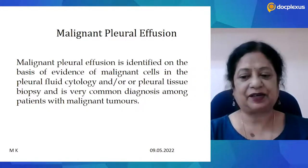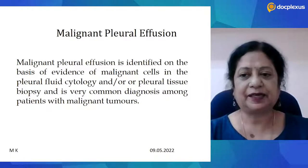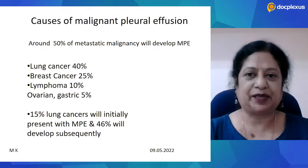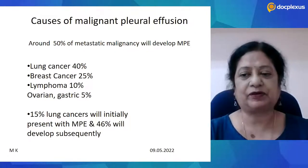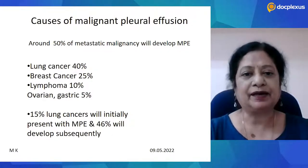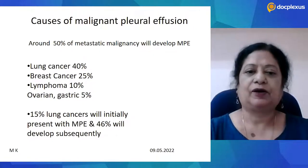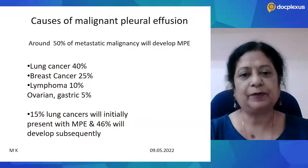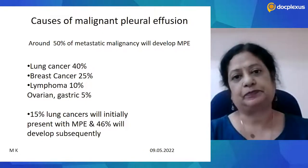Malignant pleural effusion is identified on the basis of evidence of malignant cells in the pleural fluid cytology and/or in the pleural tissue biopsy, and is very commonly diagnosed among patients with different types of malignant tumors. Around 50% of metastatic malignancy will ultimately develop malignant pleural effusion, referred to as MPE. Lung cancer contributes to nearly 40% of these, breast cancer 25%, lymphoma 10%, and ovarian and gastric together around 5%. 15% of lung cancers will initially present with MPE and 46% will develop it subsequently.